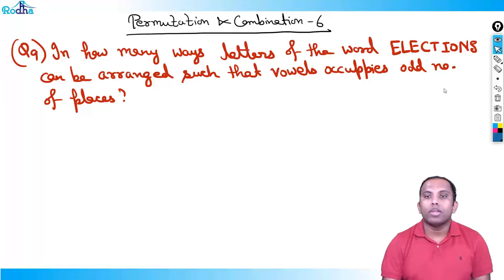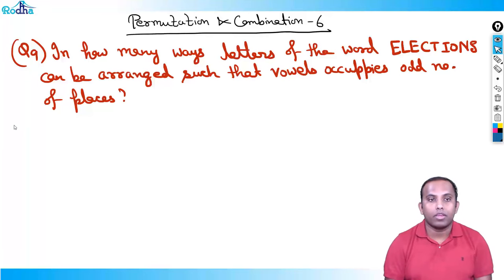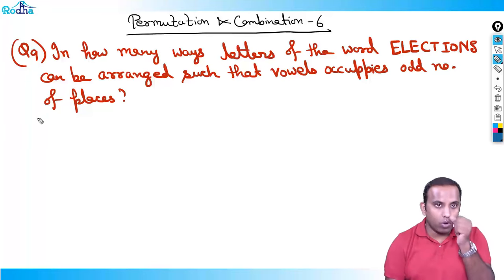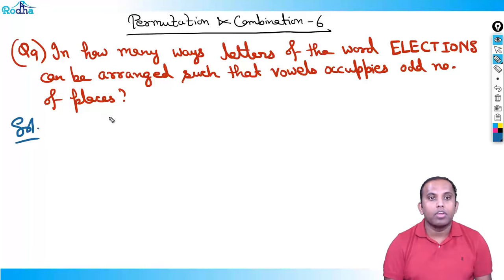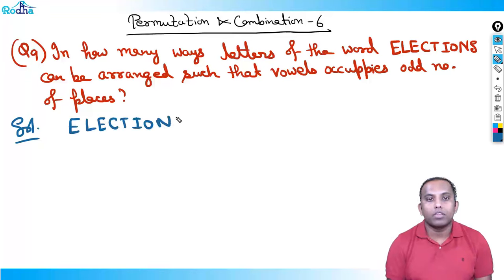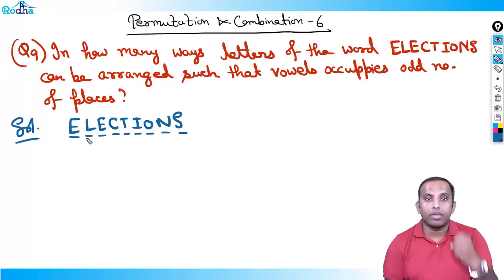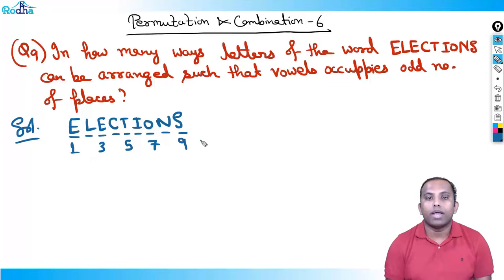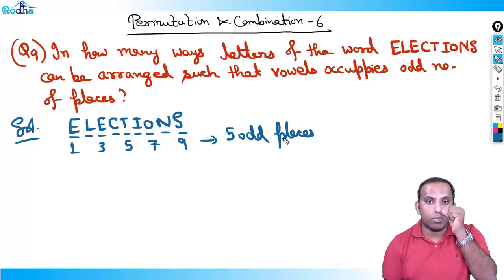Question number 9: In how many ways can the letters of the word 'elections' be arranged such that vowels occupy odd number of places? Let's solve it. The word 'elections' comprises 9 letters, and there are five odd places: 1, 3, 5, 7, and 9.